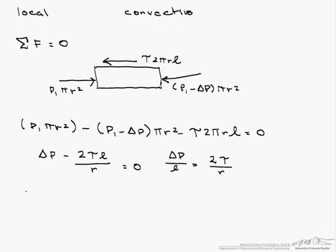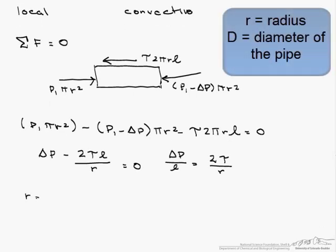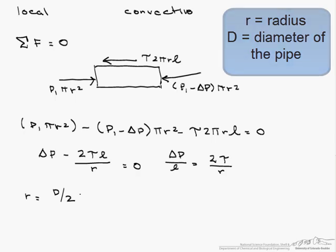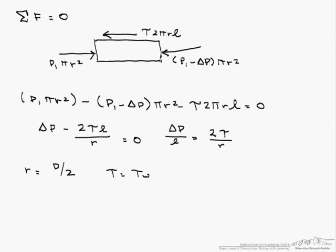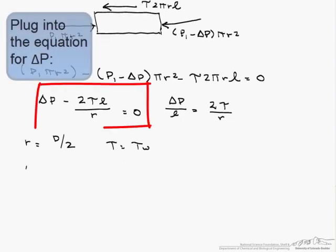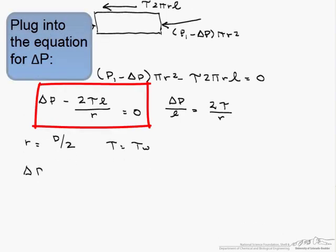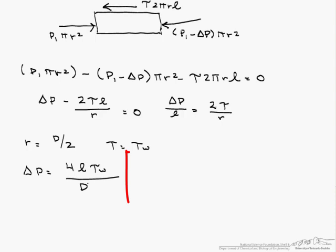Now let's look at the pipe wall. At the pipe wall, r equals d divided by 2, and our tau is our shear stress at the wall. So we can then say that delta P equals 4 times l times the shear stress at the wall, divided by d. So here is a relationship between the shear stress at the wall and our pressure drop.